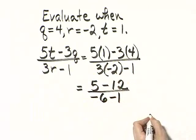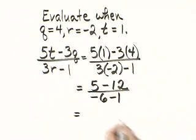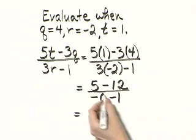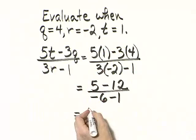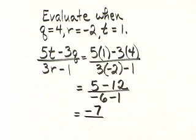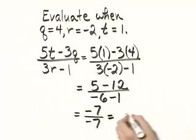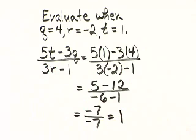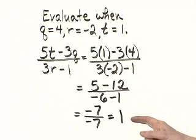Let's continue in the numerator and denominator separately. 5 minus 12, that's negative 7. In the denominator, negative 6 minus 1, that's negative 7. And what is negative 7 divided by negative 7? That is a positive 1. So the expression simplifies to 1 at these replacement values.